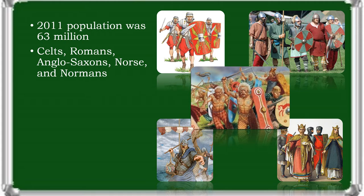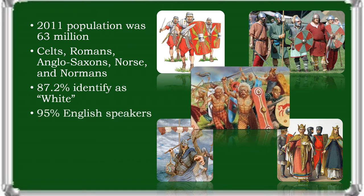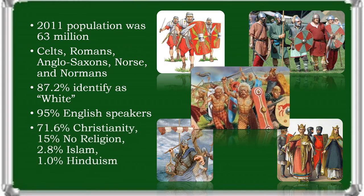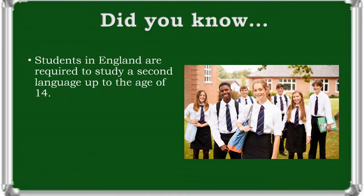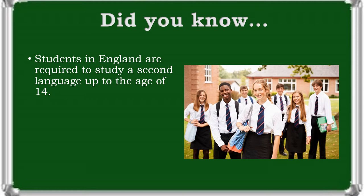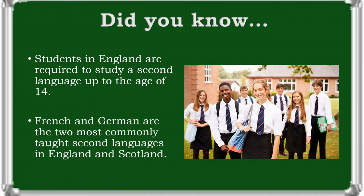In 2011, 87.2% of the UK population identified themselves as white. The United Kingdom's de facto official language is English, and it is estimated that 95% of the UK's population are monolingual English speakers. Forms of Christianity have dominated religious life in what is now the United Kingdom for over 1,400 years. In the 2001 census, 71.6% of all respondents indicated that they were Christians, with the next largest faiths being Islam and Hinduism. Students in England are required to study a second language up to the age of 14, with French and German being the two most commonly taught.